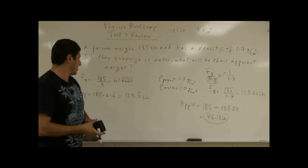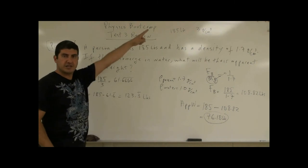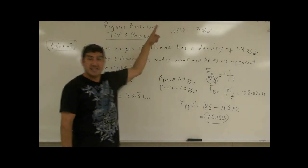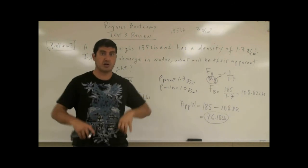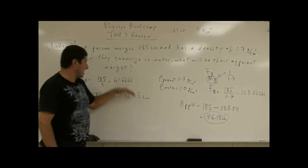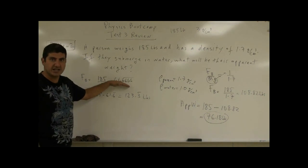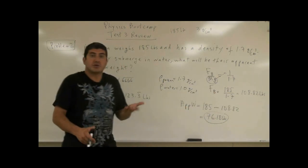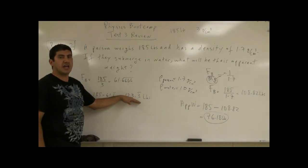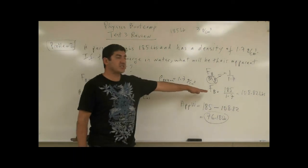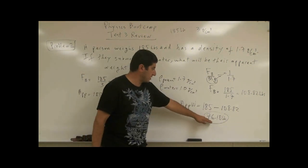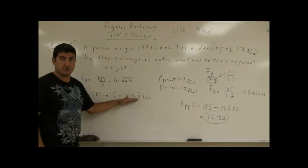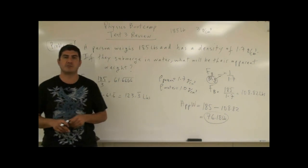Now that you know how to approach this: whatever your weight, divide by your density to get the buoyant force, then subtract it from your weight to get your apparent weight. The denser you are — the more muscular you are, the more muscle mass you have — the less the water affects you. A buoyant force of 61 versus 108 shows that a denser person weighs more in water, while a less dense person feels more of the water's upward push.